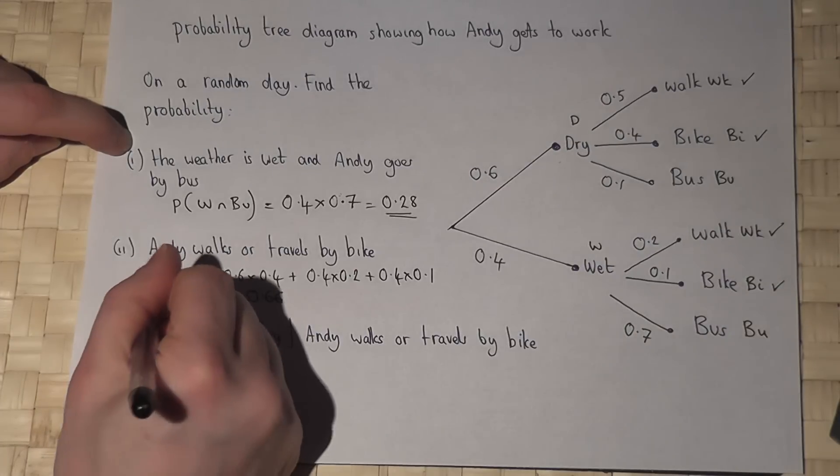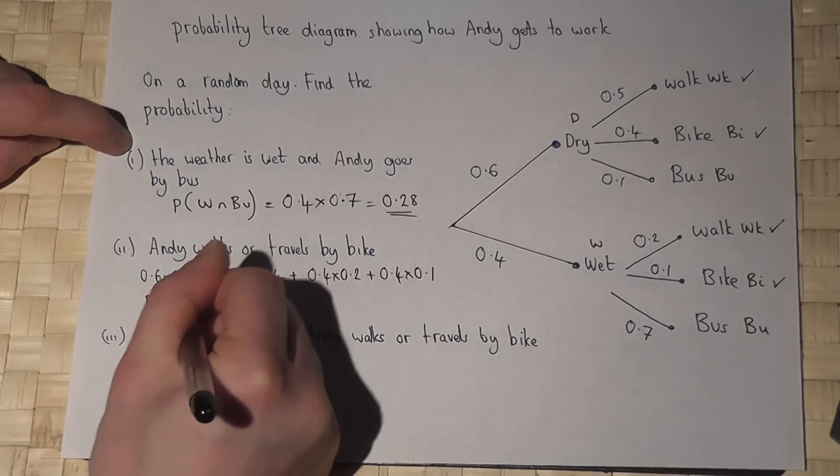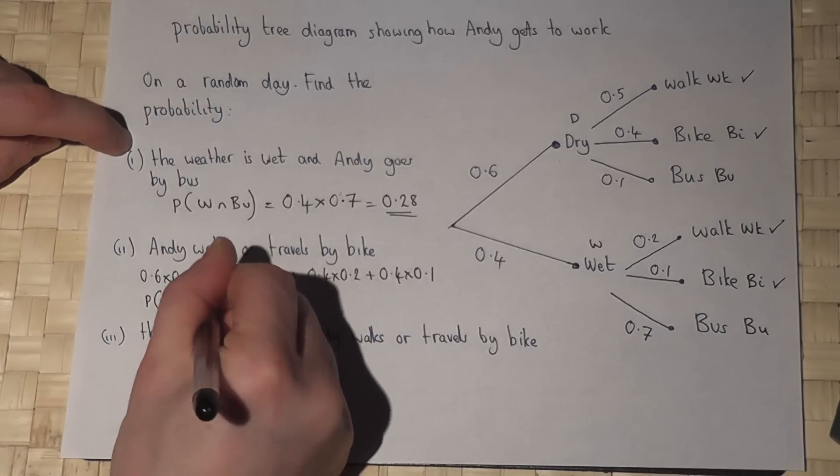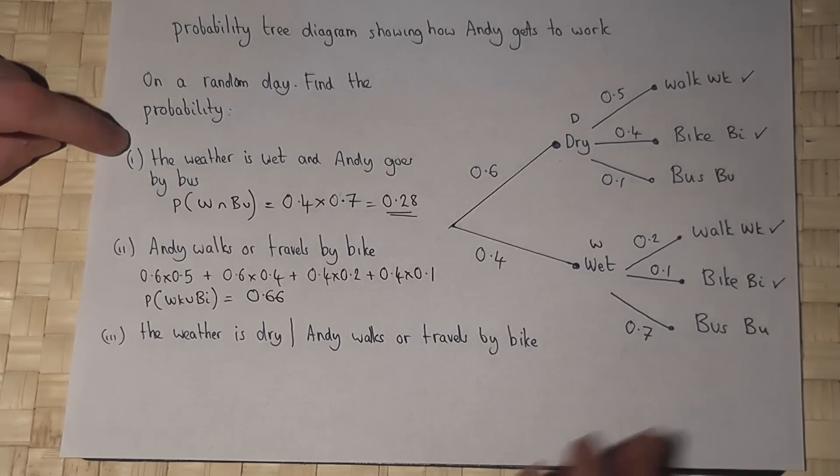That's the chance that Andy walks or travels by bike. And that symbol means or. OK.